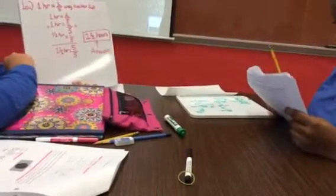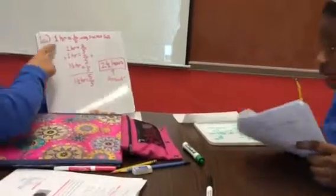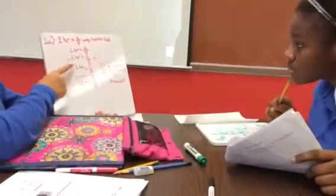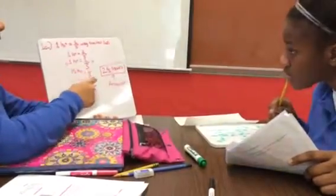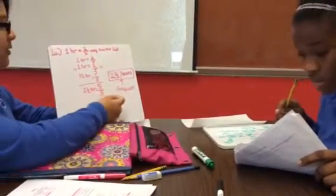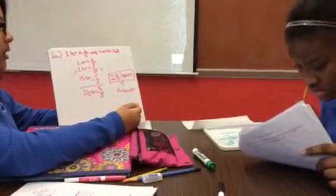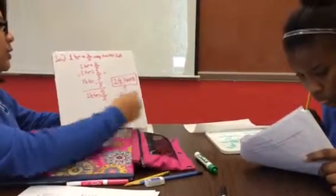Two-fifths of the bucket - in one hour it's two-fifths, so another hour would be two-fifths more, and then that would equal four-fifths. So you would have to have one-fifth to get one whole bucket full.